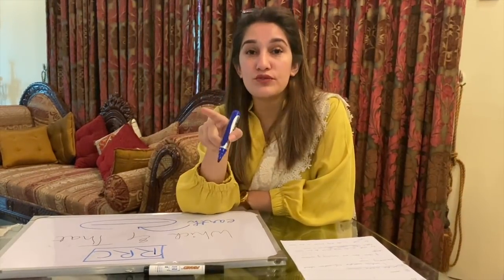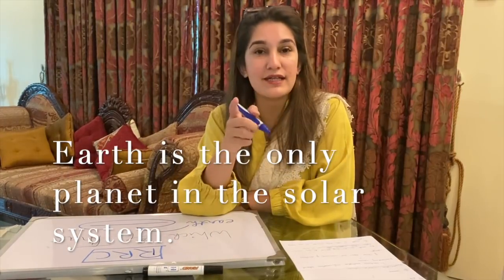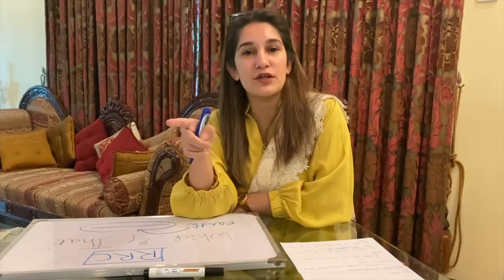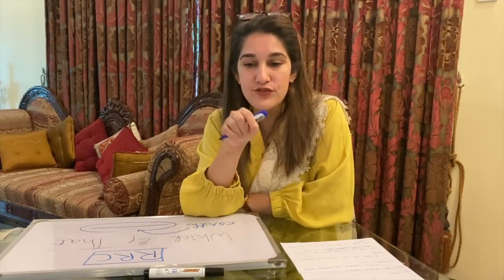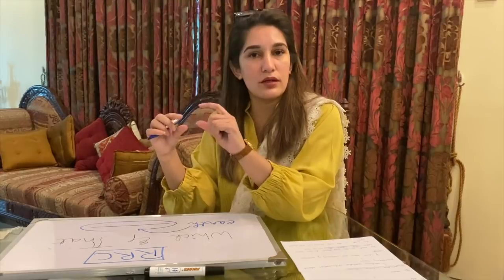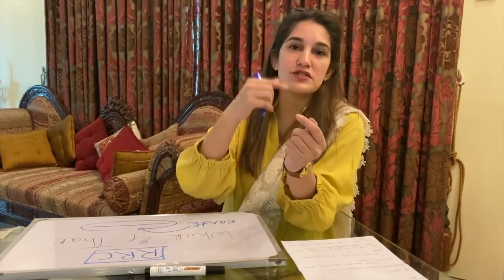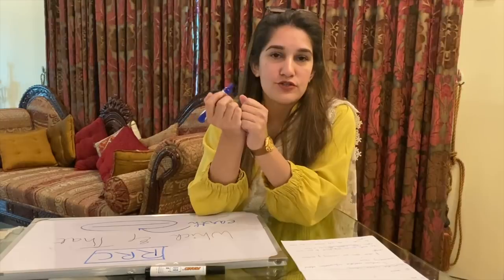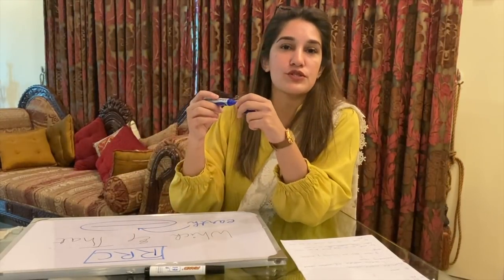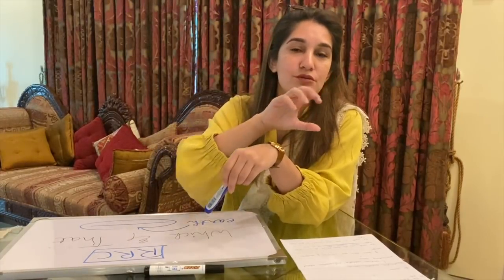Now let's see what happens if I remove this part. 'The earth is the only planet in our solar system' — the meaning has changed. Instead of saying it is the one planet which allows life, now it just says it is a planet in our solar system. So the restrictive relative clause was giving meaning to the sentence.